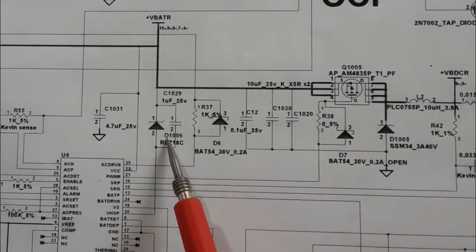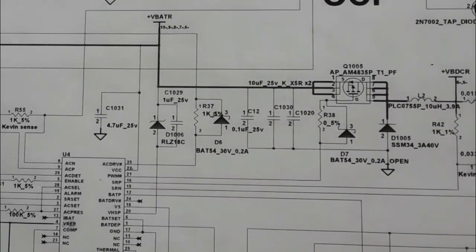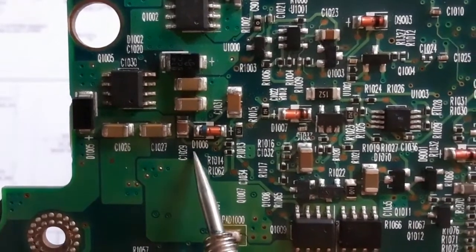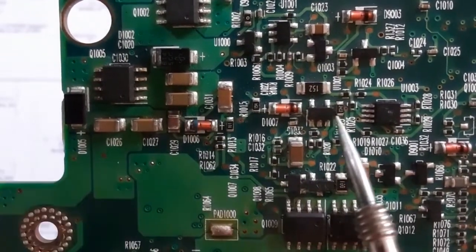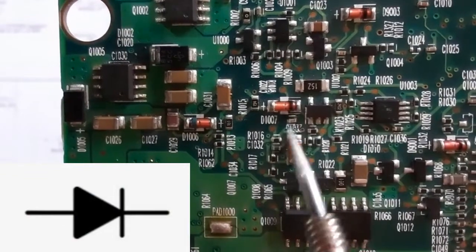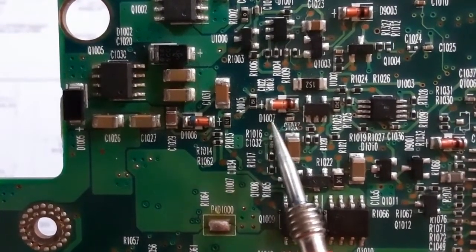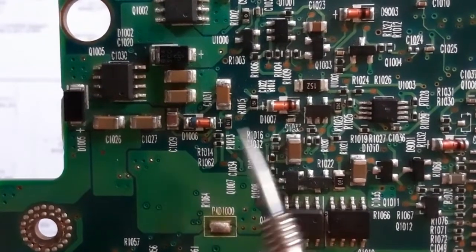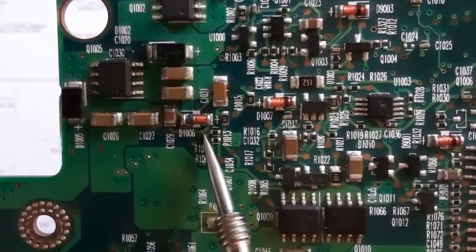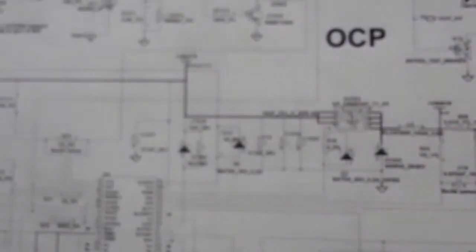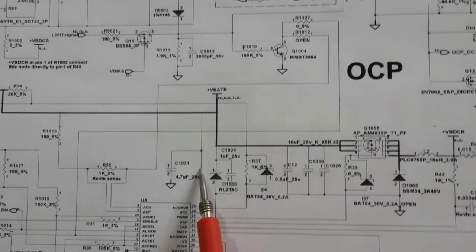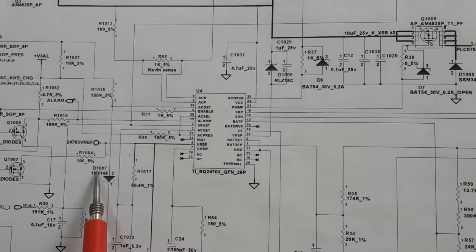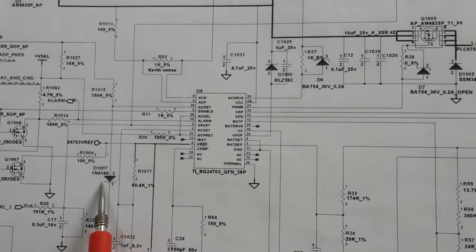We're going to see all these diodes — this is the reference for this diode. In the motherboard, D1006 has a blue line — that is the zener diode — while a normal diode like D1007 has a black line with a straight line. D1006 with the blue line is the zener diode, used to stabilize the current. D1007 is a normal diode.